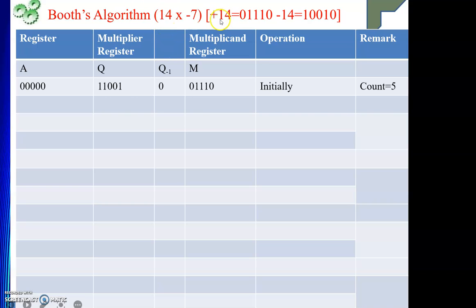So first, 14 in binary is 01110 — that is 8+4+2 = 14 — and the sign bit is 0. This is our multiplicand. What is −14? That is the 2's complement of 14: reading from the right, we copy up to and including the first 1, then flip the remaining bits, giving us 10010. So we have both +14 and −14 ready.